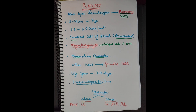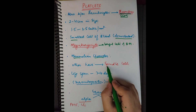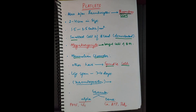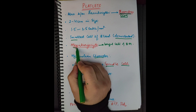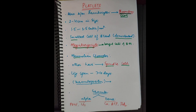Platelets have a mammalian character — they are only present in mammals, not in any other organism. For clotting function in other organisms, there are cells known as spindle cells. Platelets as such are only present in mammals. You need to remember that megakaryocyte is the important cell which helps in the formation of platelets.